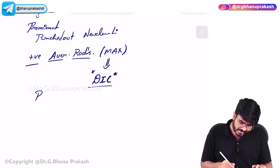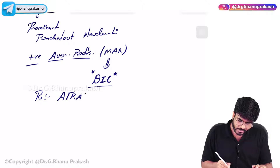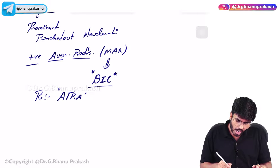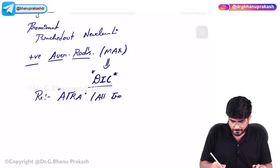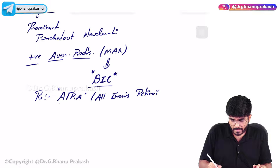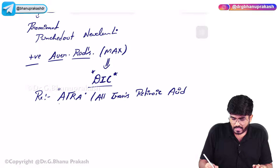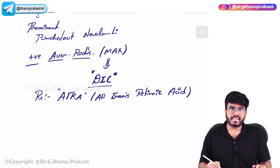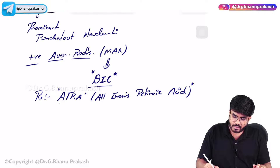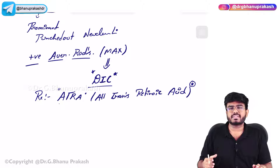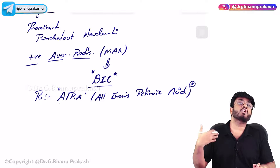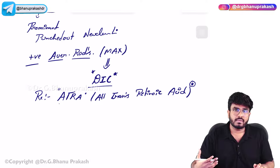How to treat this? The treatment is with a drug called ATRA - all-trans retinoic acid. This is the drug which is going to bind with the retinoic acid receptor - the disrupted receptor - and going to make the cells mature again to a certain degree.